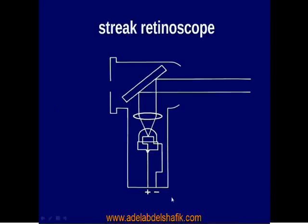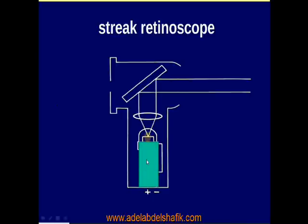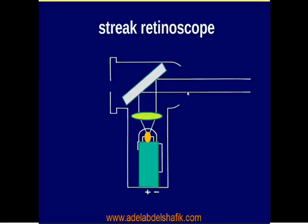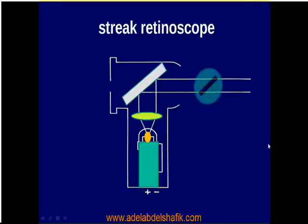In case of the streak retinoscope, it is formed of a source of electricity that illuminates one lamp. This lamp emits rays that pass through a lens, which makes the rays parallel. These rays are reflected on a mirror and come out as parallel rays. Instead of diffused light, a barrier allows light to come out only in a streak form. This streak can be made vertical, horizontal, or oblique in any meridian.